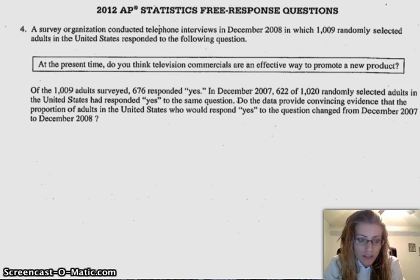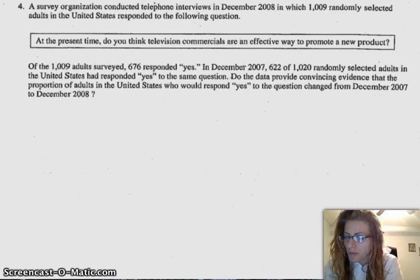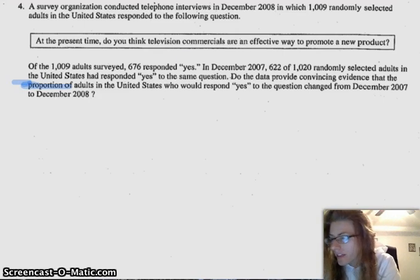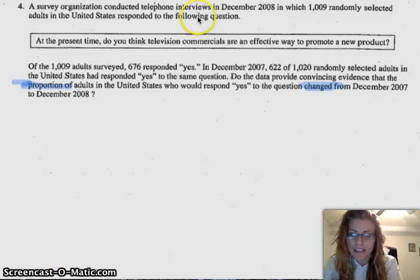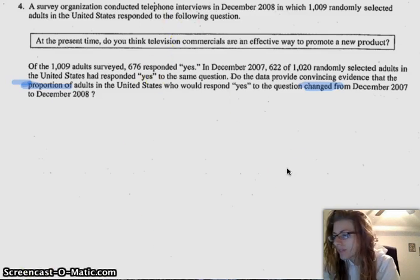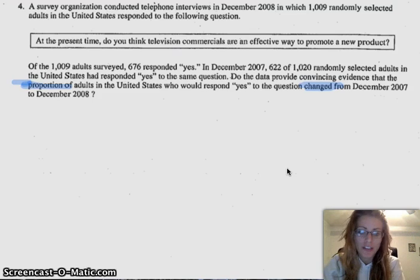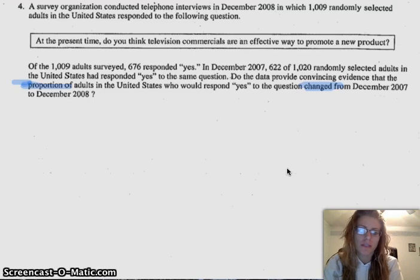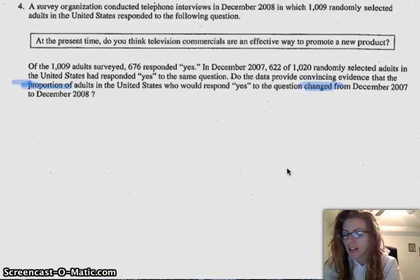So keywords that you want to use to figure out what kind of test you're going to be doing are proportion. That tells you that you're dealing with proportions, not means. And then they say, did the data provide convincing evidence that the proportion of adults changed from December 2007? Since it doesn't say has the proportion increased or has the proportion decreased, you just want to know if it has changed. That means it's going to be two-sided.